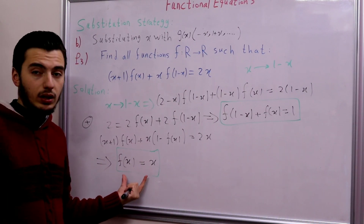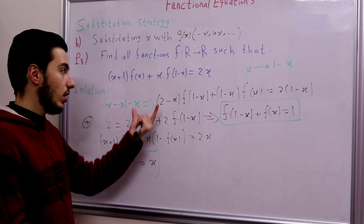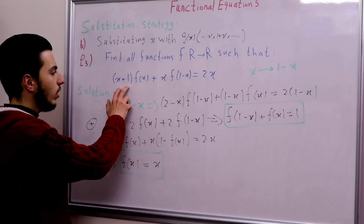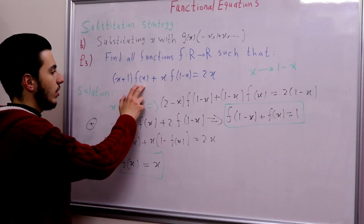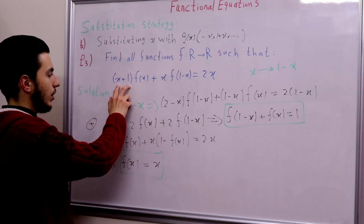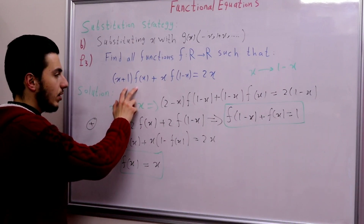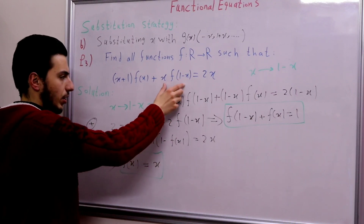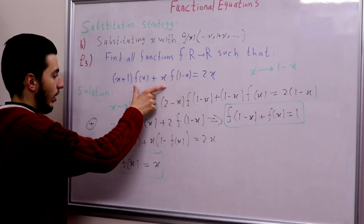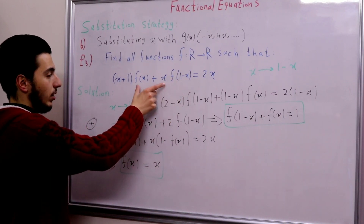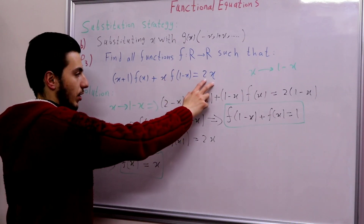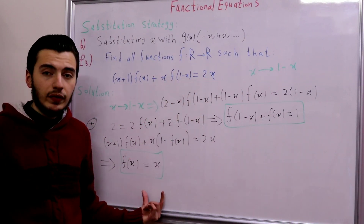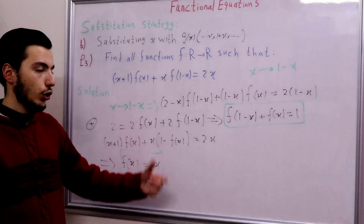So we've found our function: f(x) = x. Let's verify it satisfies the functional equation. We have (x + 1)·x = x² + x, and x·(1 − x) = x − x². Their sum is indeed 2x, confirming that f(x) = x is indeed a solution.